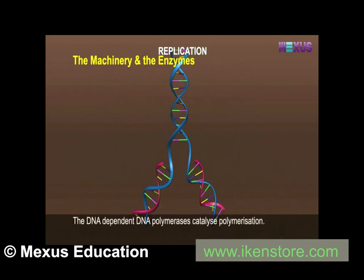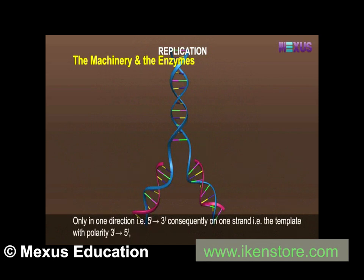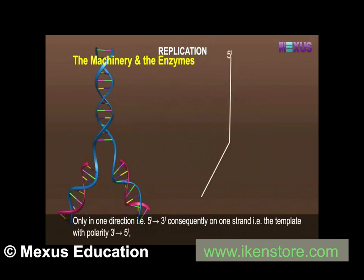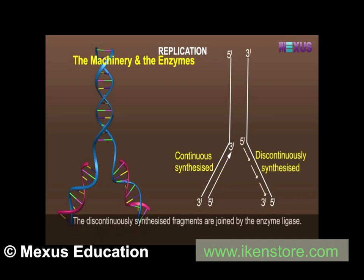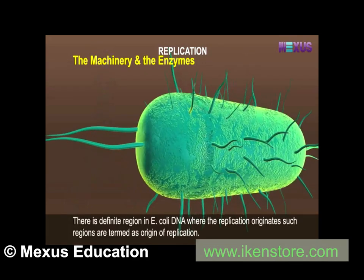The DNA-dependent DNA polymerase catalyzes polymerization only in one direction, that is 5' to 3'. Consequently, on one strand — the template with polarity 3' to 5' — the replication is continuous. While on the other strand — the template with polarity 5' to 3' — it is discontinuous. The discontinuously synthesized fragments are joined by the enzyme ligase.